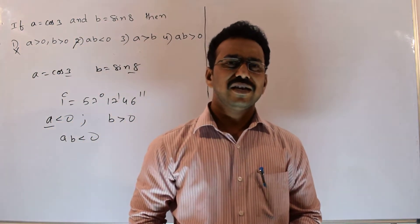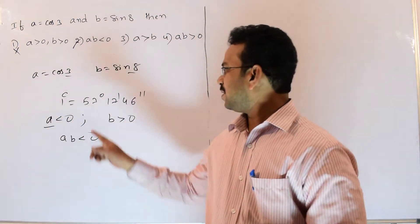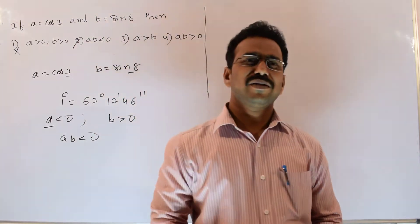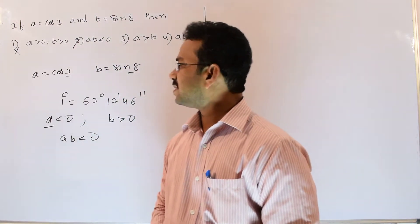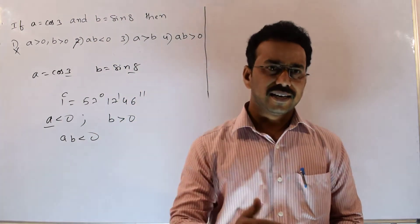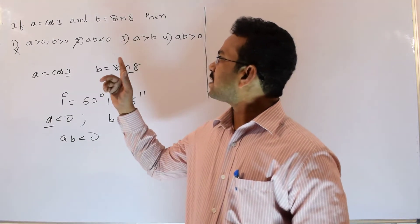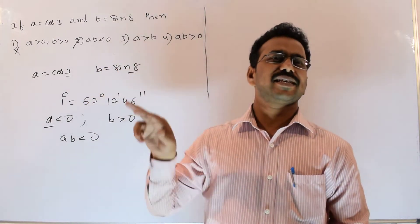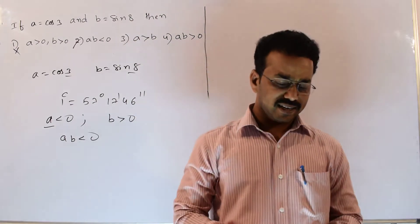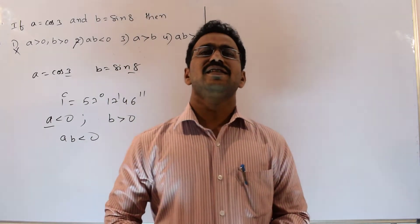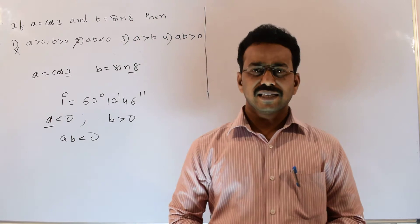What is the key concept we used here? Simply we applied the concept 1 radian equals to 57 degrees 17 minutes 46 seconds. And then we decided the signs of sin and cos. Both the angles belong to the second quadrant. In the second quadrant sine is positive and cos is negative. Thanks for watching. All the best.